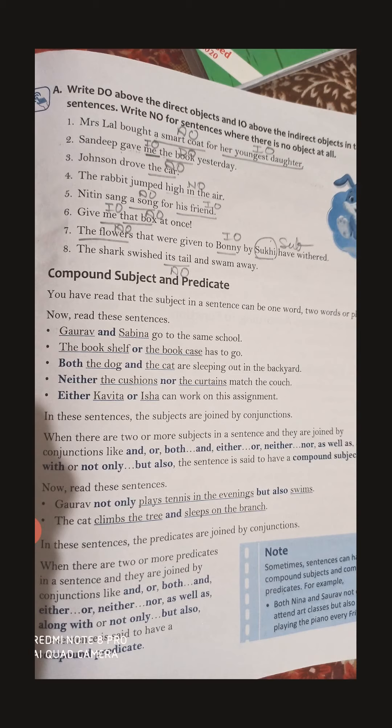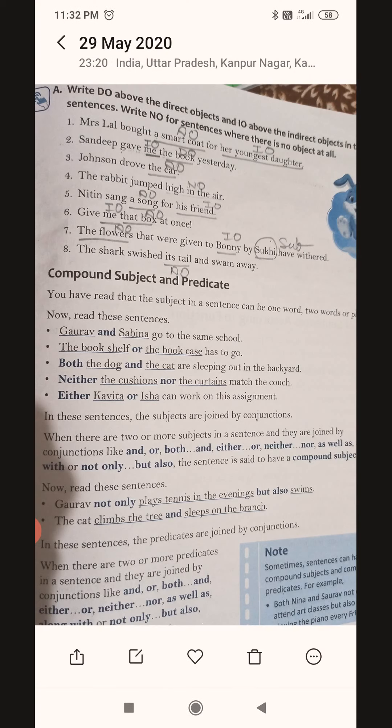For example: 'Gaurav not only plays tennis in the evening but also swims.' Here we have two pieces of information about Gaurav — he plays tennis and he swims. Similarly, 'The cat climbs the tree and sleeps on the branch.' There are two actions. Whenever there are two or more actions, we say there is a compound predicate in the sentence.